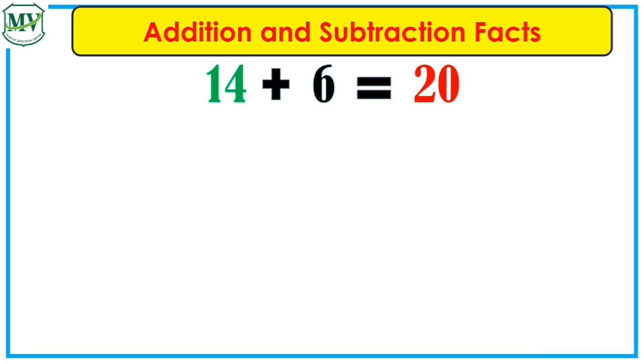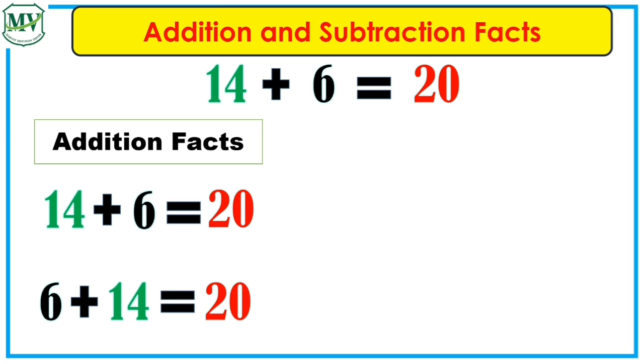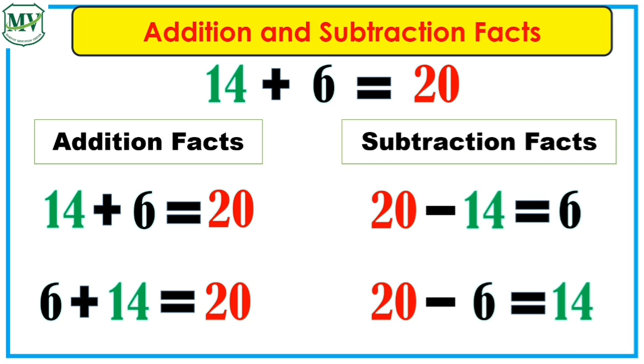Now, let's have the number facts of 14 plus 6. Addition facts: 14 plus 6 equals 20, 6 plus 14 equals 20. Subtraction facts: 20 minus 14 equals 6, 20 minus 6 equals 14.